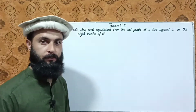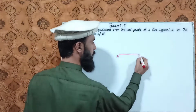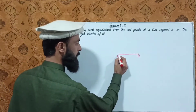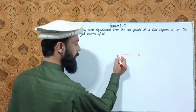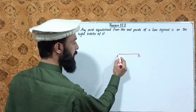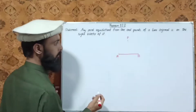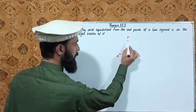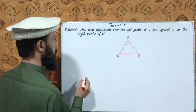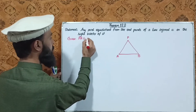Suppose we have a line segment AB. We need to show that the perpendicular bisector passes through it. A and B are the endpoints of line segment AB. The point P is equidistant from A and B — that is, PA is congruent to PB.